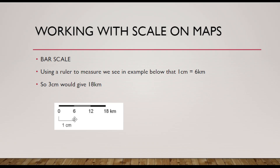The bar scale is different — it doesn't have a ratio but instead has segments that you measure using a ruler. In the example below, one centimeter on the bar scale equals six kilometers, so if you measured three centimeters on the map, that would give you 18 kilometers in reality.